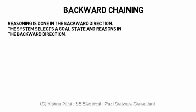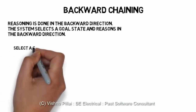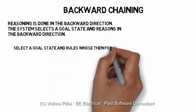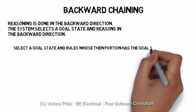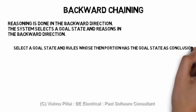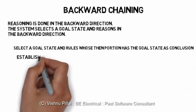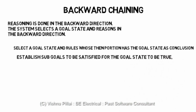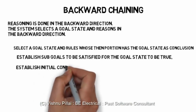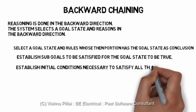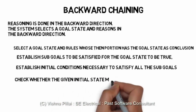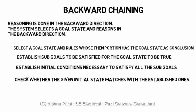Another example is the use of backward chaining. In forward chaining, we had a set of rules and concluded the goal from them. In backward chaining, the reasoning is done in the backward direction — the system selects a goal state and reasons backwards. The steps are: select a goal state, find rules whose conclusion has the goal state, establish sub-goals to be satisfied for the goal state to be true, establish initial conditions necessary to satisfy all sub-goals, and check whether the given initial state matches the established ones.